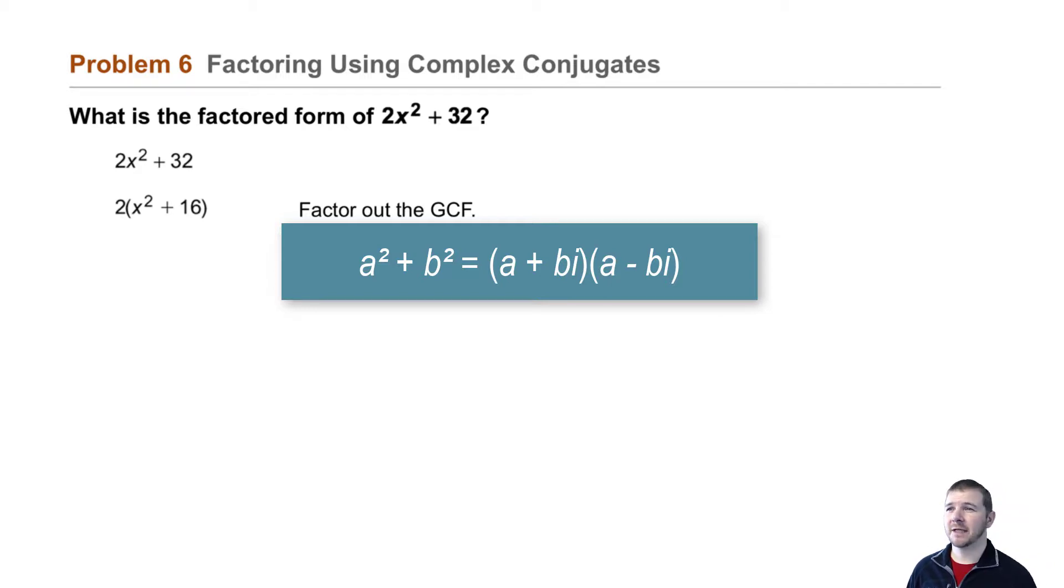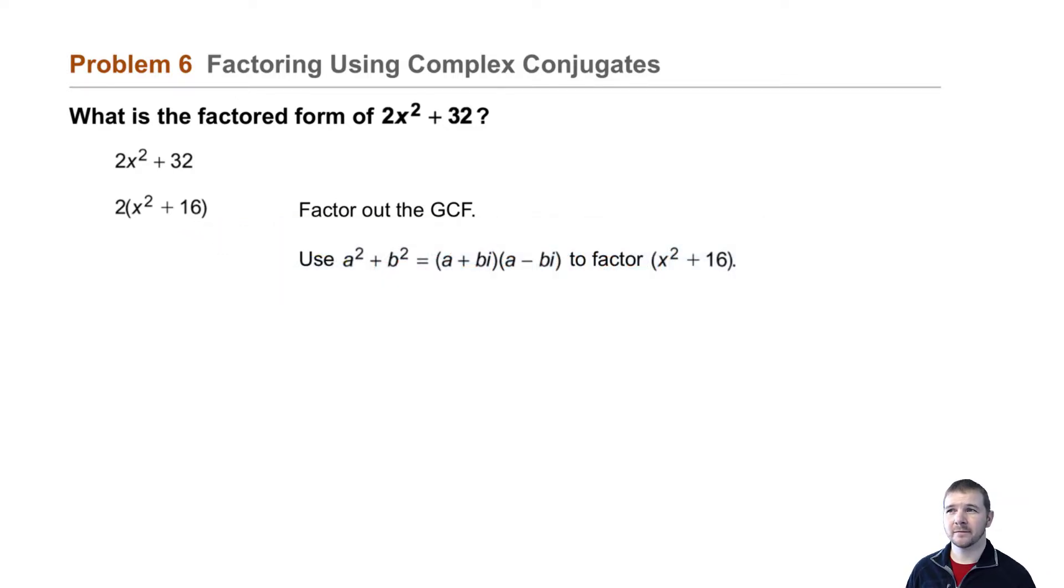And now our completely factored form becomes 2(x + 4i)(x - 4i).